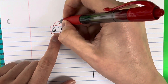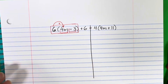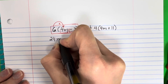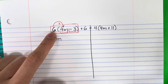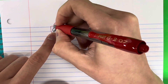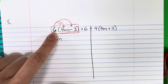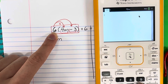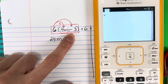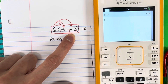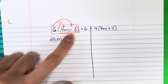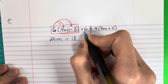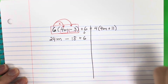6 times 4 is 24 — copy the m. Then 6 times negative 3: use a calculator if you need to. 6 times negative 3 is negative 18, so we put minus 18. Copy the plus 6 because it is not part of the parentheses.